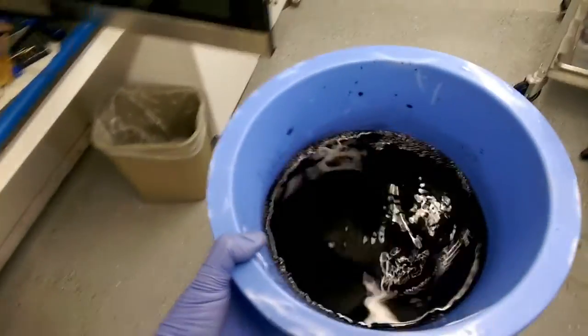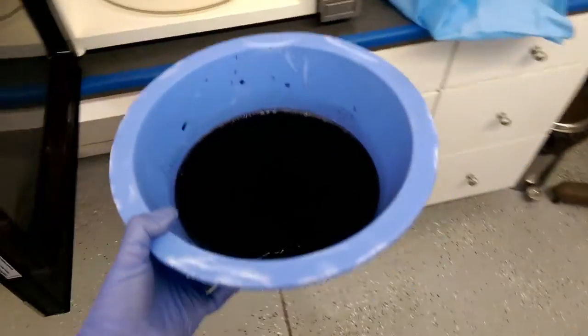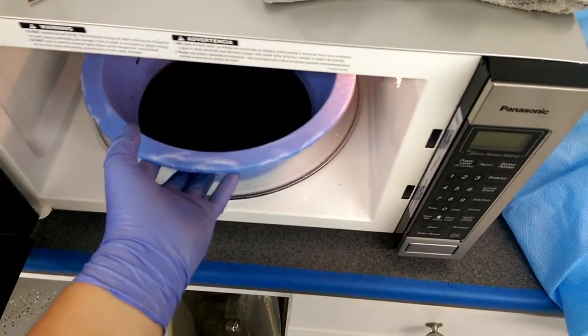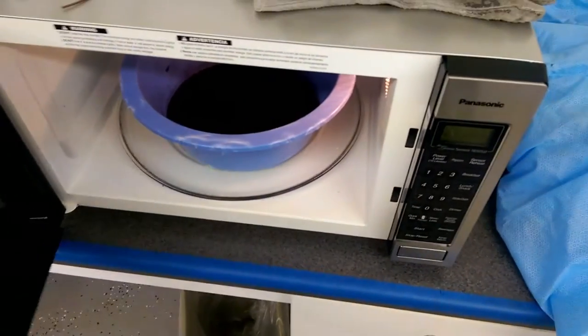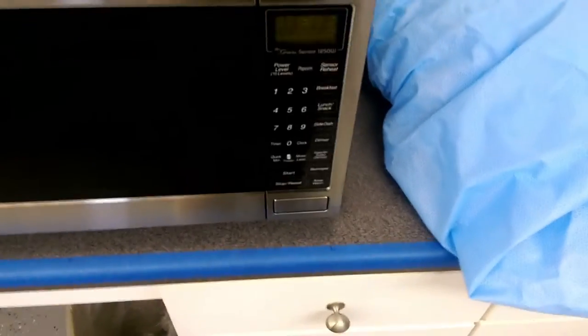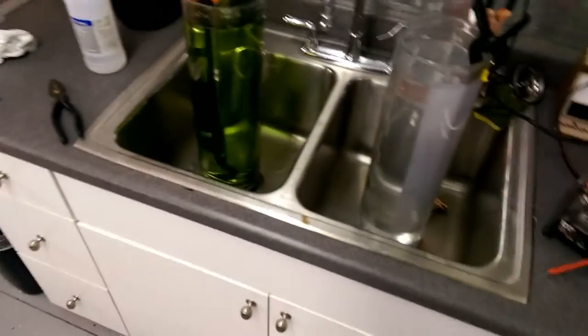I'm going to go ahead and put our anodizing dye into the microwave and we're going to heat this up to about 140 to 160 degrees C, and then dunk our aluminum in there.